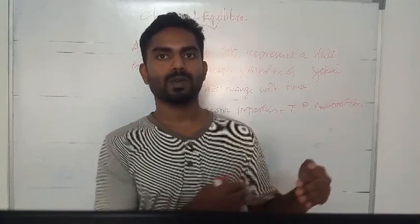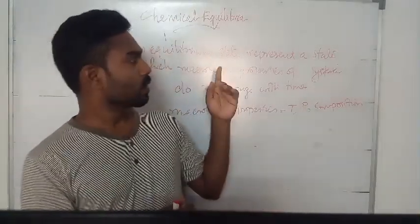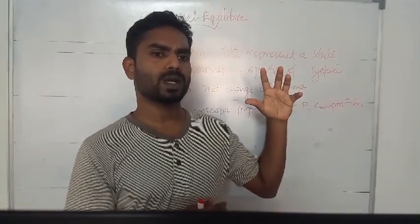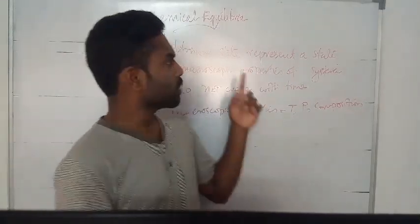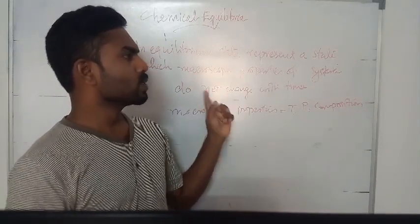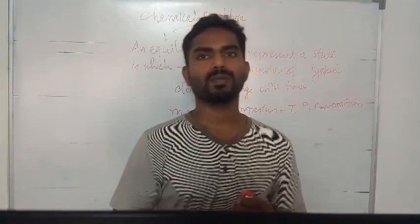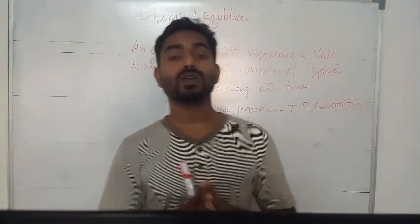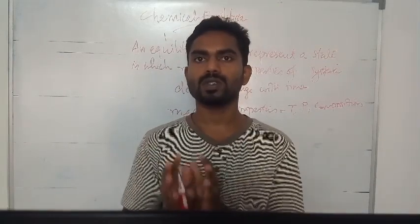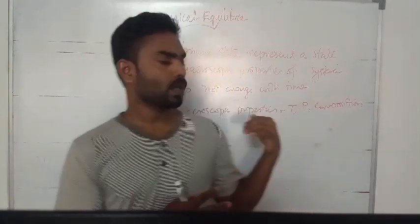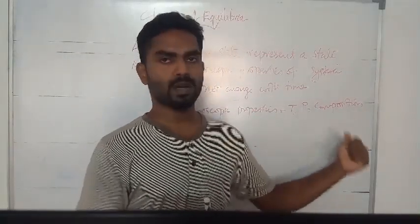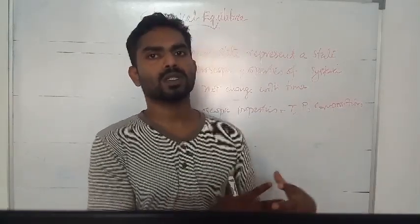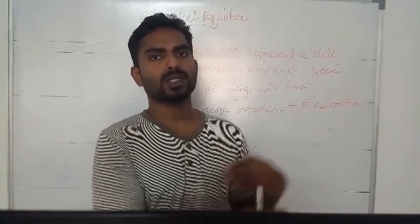What is an equilibrium state? It represents a state in which macroscopic properties of a system do not change with time. The equilibrium state represents a state in which macroscopic properties of a system do not change with time. Macroscopic properties include temperature, composition, and different types of macroscopic properties.